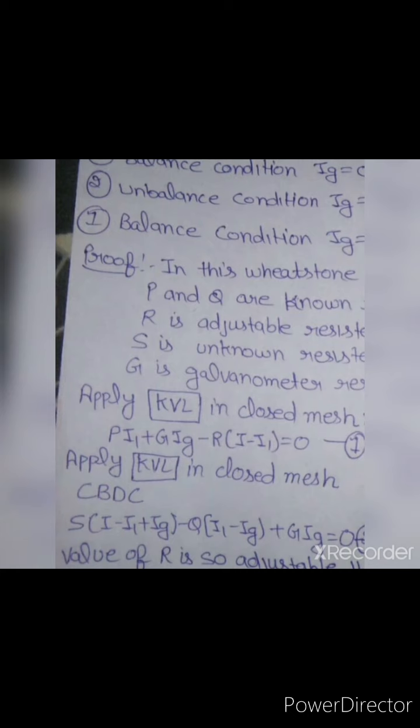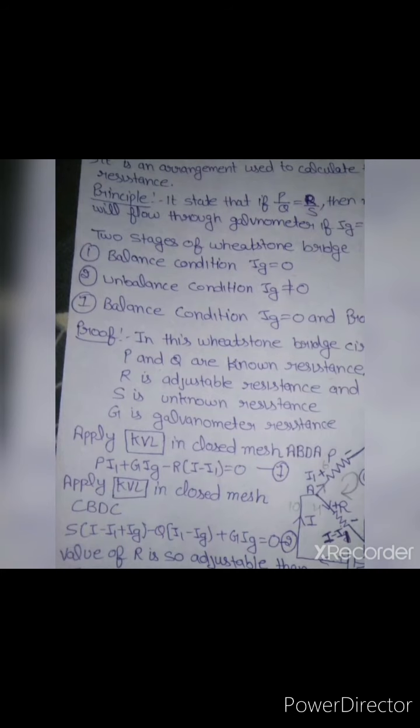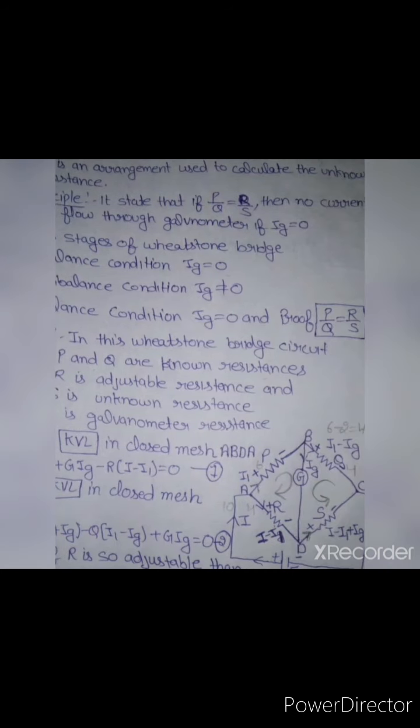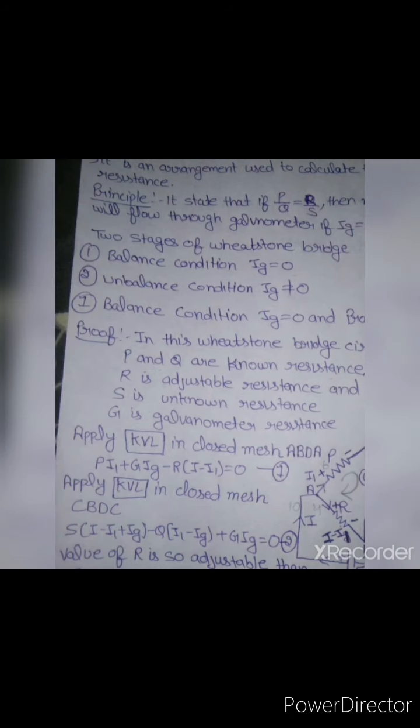From the first and second equations, points B and D have the same potential, meaning I_G equals zero. So we get P times I1 minus R times (I minus I1) equals zero.